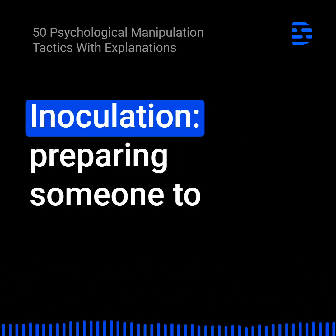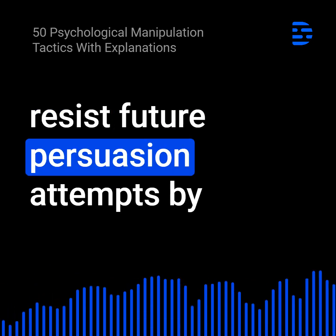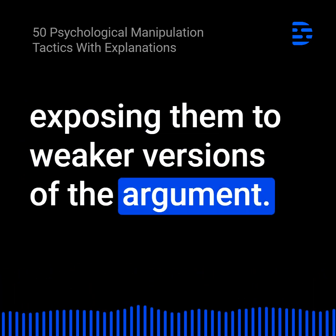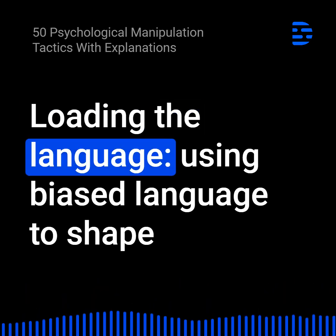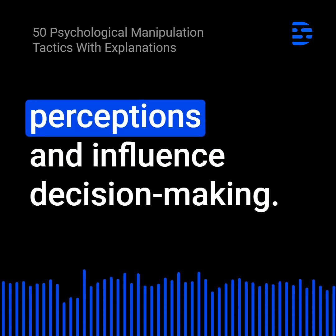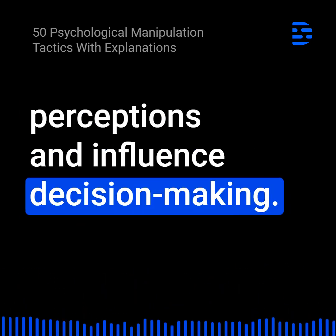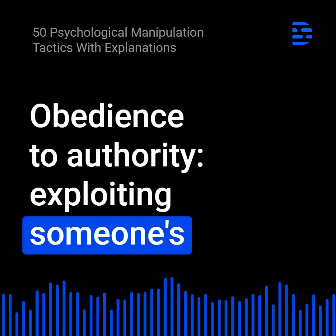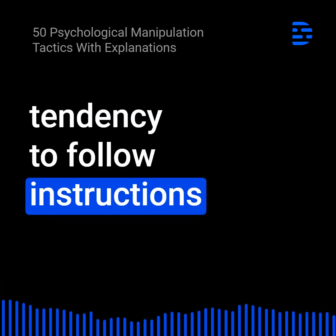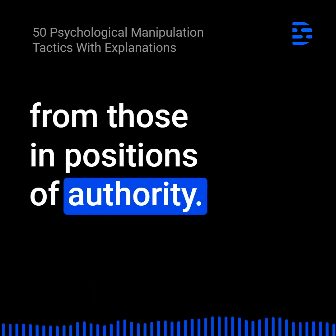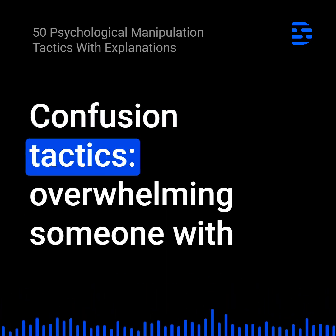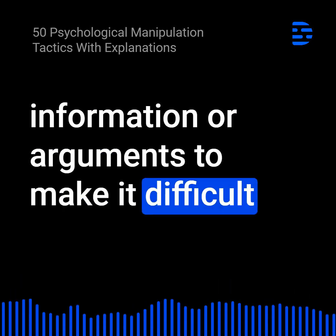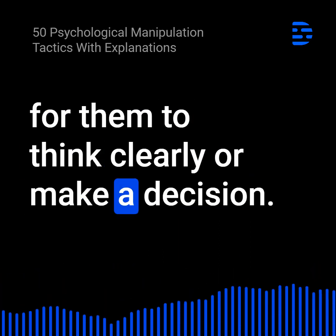15. Inoculation: Preparing someone to resist future persuasion attempts by exposing them to weaker versions of the argument. 16. Loading the language: Using biased language to shape perceptions and influence decision-making. 17. Obedience to authority: Exploiting someone's tendency to follow instructions from those in positions of authority. 18. Confusion tactics: Overwhelming someone with information or arguments to make it difficult for them to think clearly or make a decision.